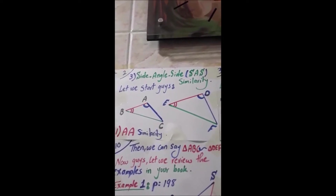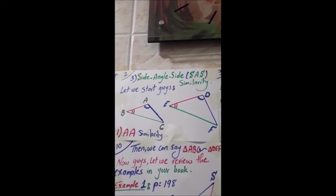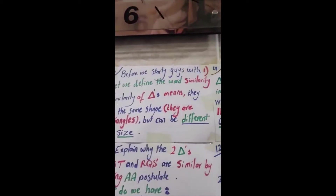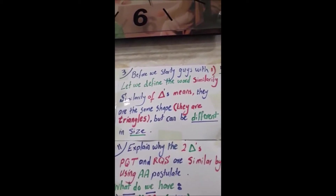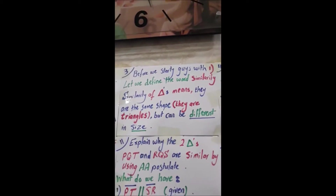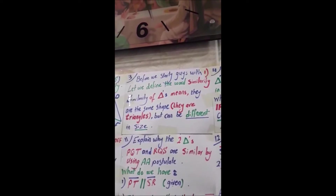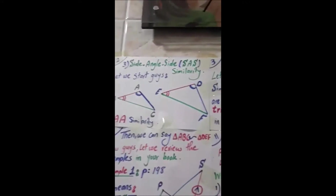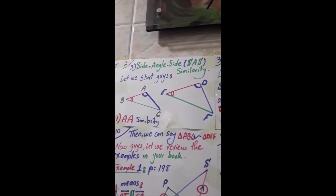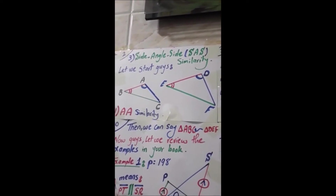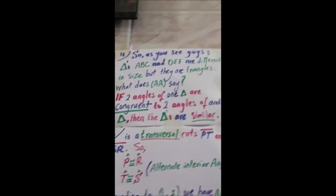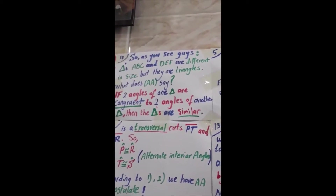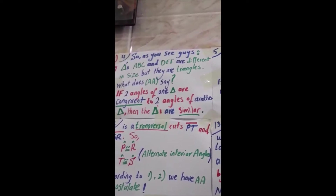As you see, we have two triangles, ABC and DEF. Similarity of two triangles means they are the same shape — they are both triangles, but they can be different in size. So these two triangles, ABC and DEF, are different in size but they are triangles. This is the meaning of similarity.